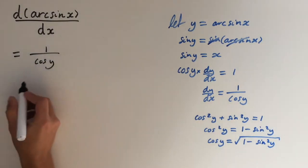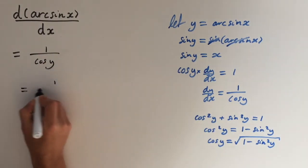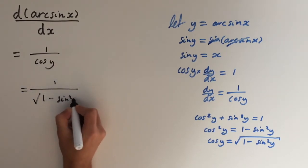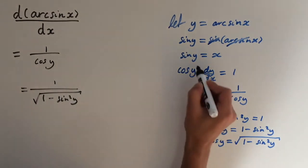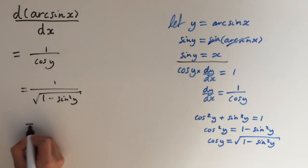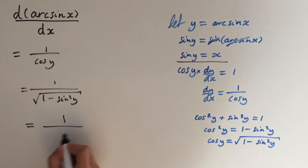So this right here equals 1 over the square root of 1 minus sine squared of y. And we also know that sine of y equals x. So I'm just going to substitute that in. This will give us 1 over the square root of 1 minus x squared.